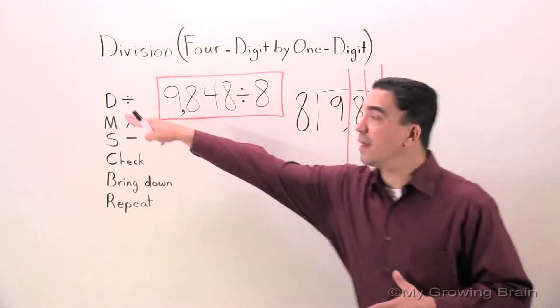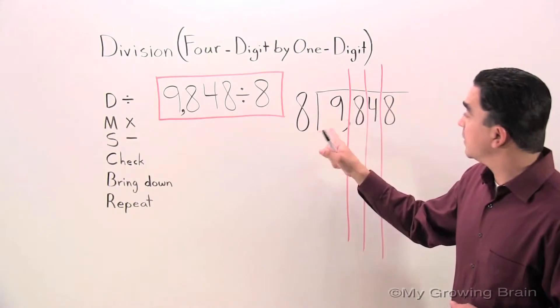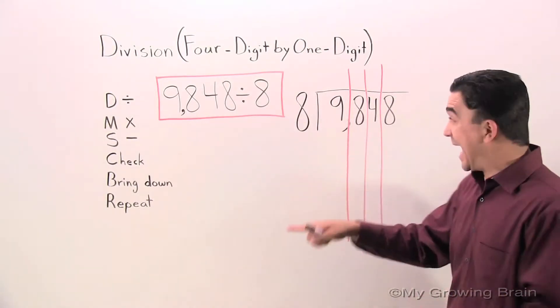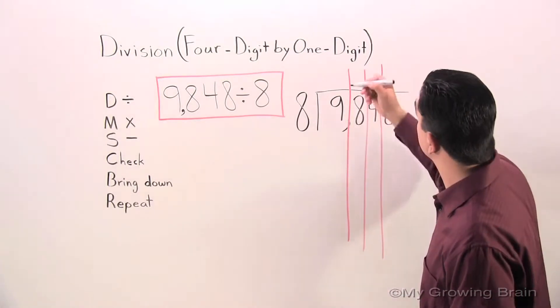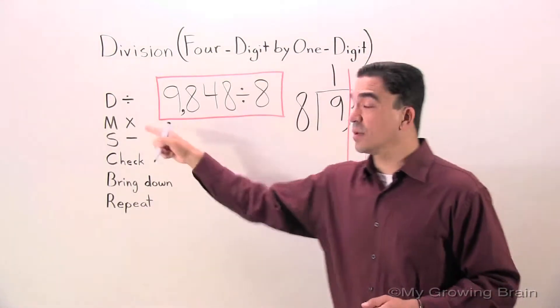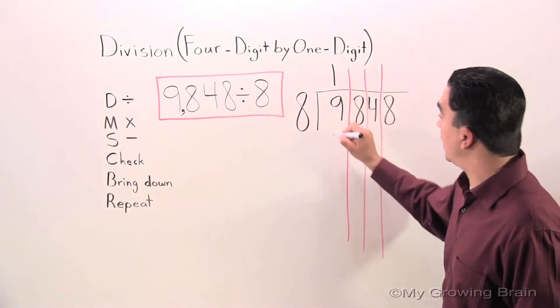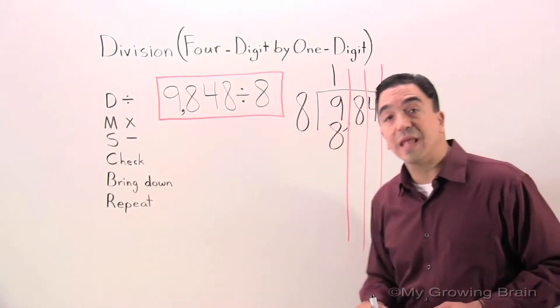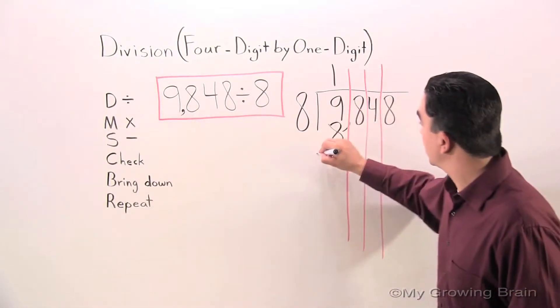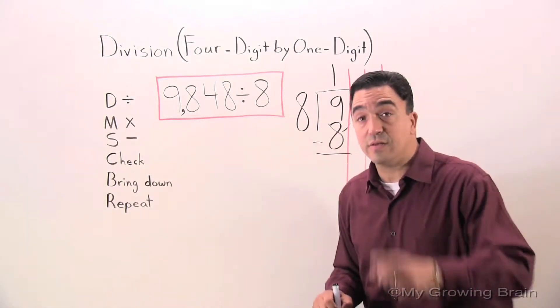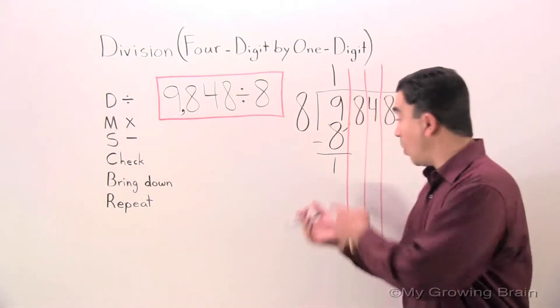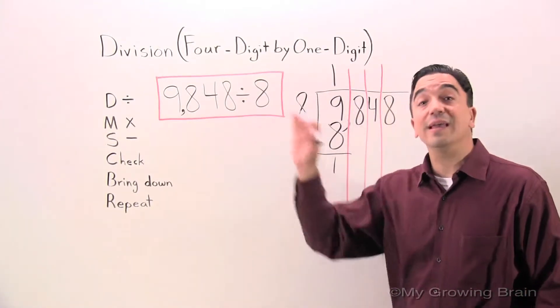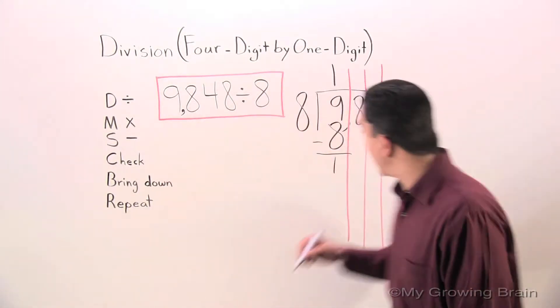Start with divide. 9 divided by 8, or 8 into 9, one time. Multiply. 8 times 1, 8. Subtract. 9 minus 8, 1. Check. 1 is less than 8. Keep going. Bring down.